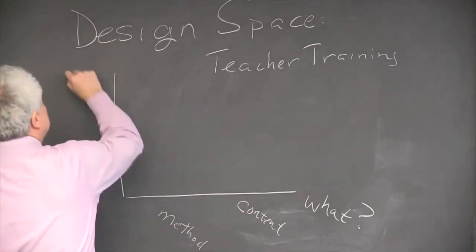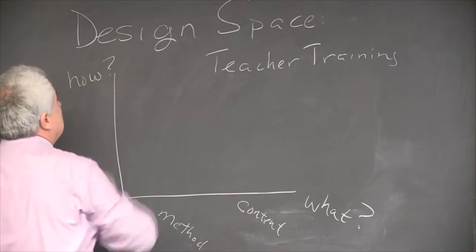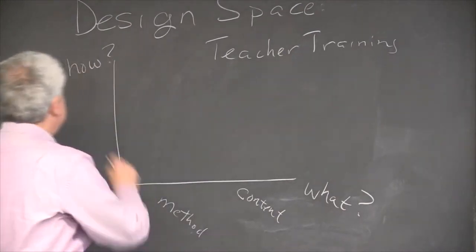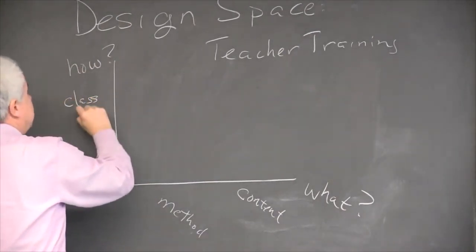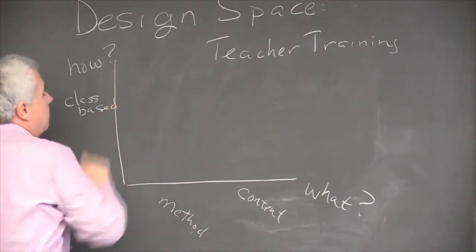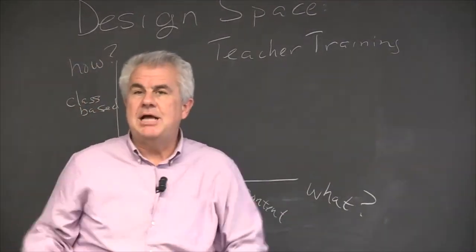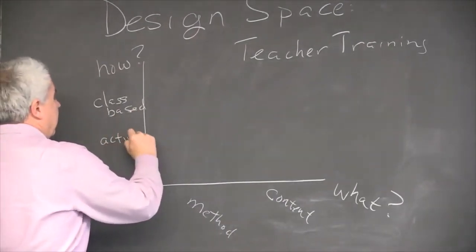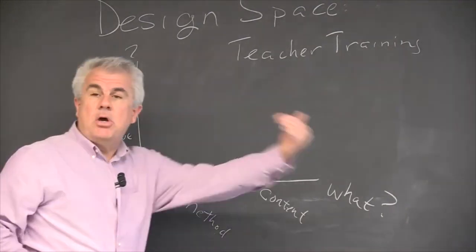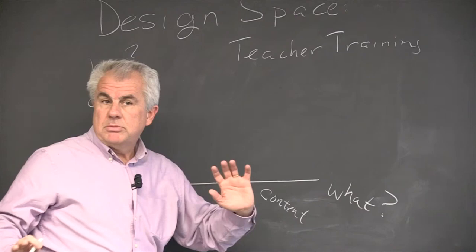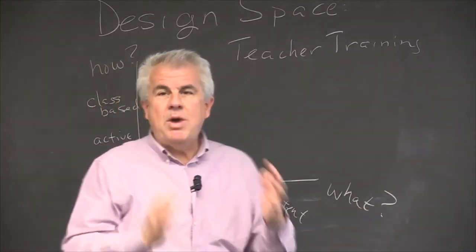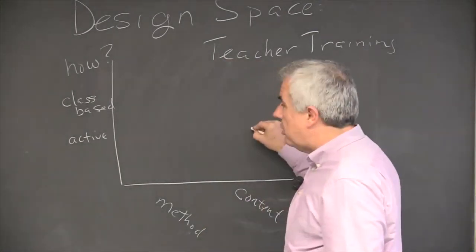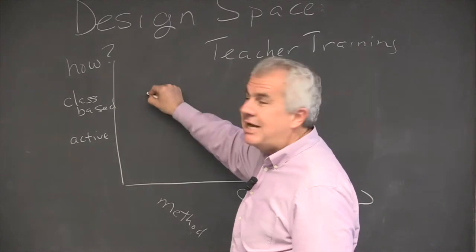But there's a second dimension of the design space, which is how. How are we going to convey this content to teachers? We could have class-based teaching where we bring the teachers to some location and teach them in a classroom setting, or we could have active learning where the training goes to the teacher's classroom environment. We could transmit method with active learning or content with active learning, method with class-based teaching.